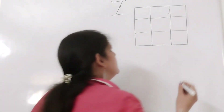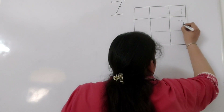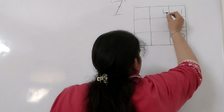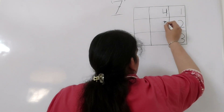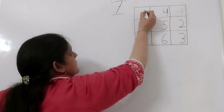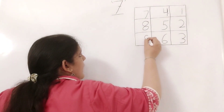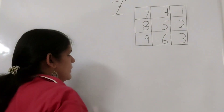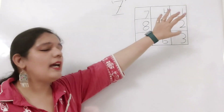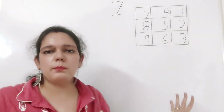So let's write 1, 2, 3, 4, 5, 6, 7, 8 and 9. So what we have done? We have written 1 to 9 digits on the ones place in the grid.